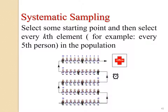Systematic sampling: we select a sample in a systematic order. For example, select a starting point and then select every kth element. In the picture, we select every 5th person as the sample from the population. This type we call systematic sampling.